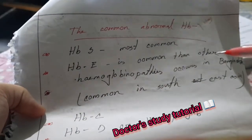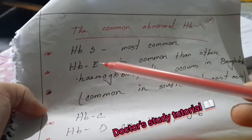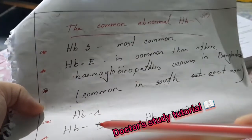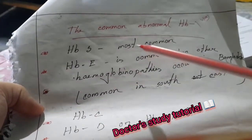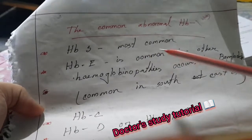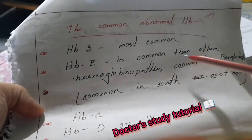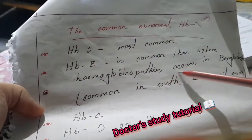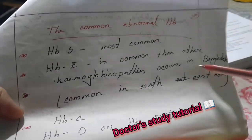The common abnormal hemoglobins are Hemoglobin S, Hemoglobin E, Hemoglobin C, and Hemoglobin D. Hemoglobin E is the most common hemoglobinopathy occurring in Bangladesh.